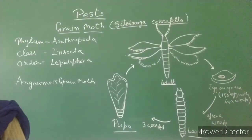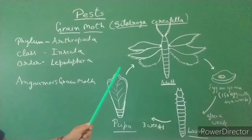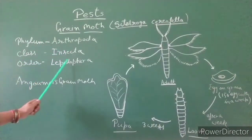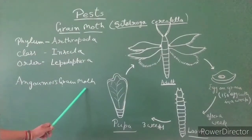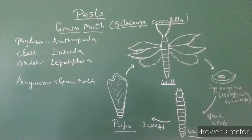Now we will take the first grain moth. The zoological name of the grain moth is Sitotroga cerealella. The classification and systematic position of this moth is Phylum Arthropoda, class Insecta, order Lepidoptera. It is also known as the Angoumois grain moth because it was first described from the French province of Angoumois in 1736. This small moth causes severe damage to stored paddy and jowar, but it is also reported to damage wheat, barley and maize.